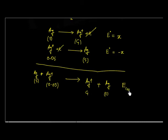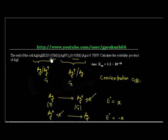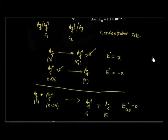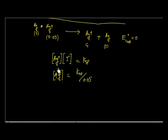Now E° cell is 0 for a concentration cell. Now I can calculate the Ag+ concentration. So you know Ag+ plus I minus — that is basically Ksp. So if you see the left side, Ag+ plus I minus equals Ksp. I minus is 0.05. So Ag+ I can calculate. Ag+ equals Ksp divided by 0.05.